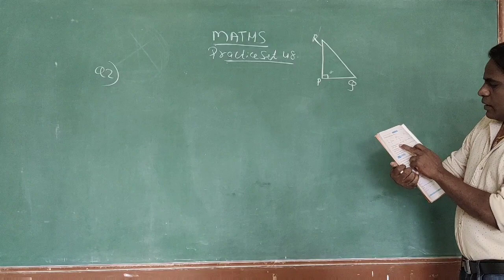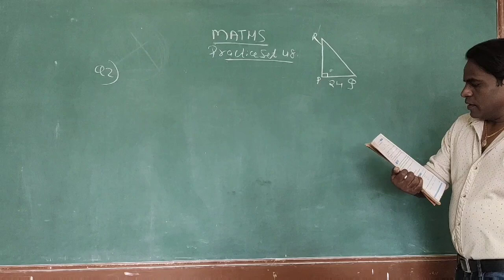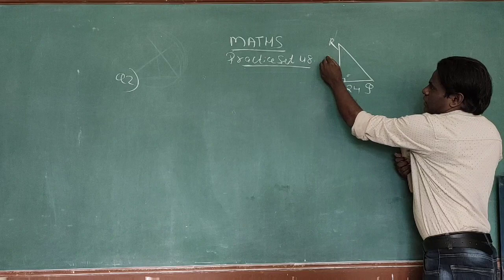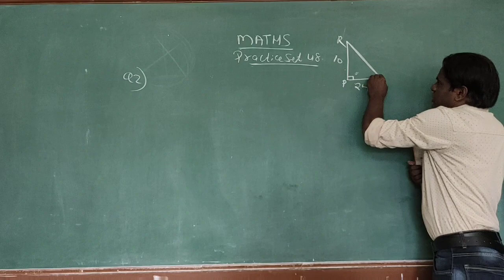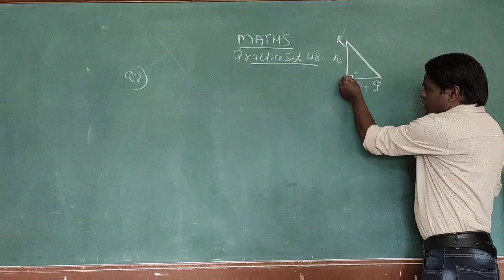This is given: PQ is 24 cm, PR is 10 cm. We have to find the length of QR, which is the hypotenuse.